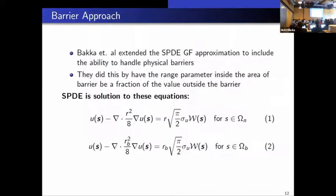So recently, Bakka and Rue, they extended the SPDE, the Gaussian field approximation to include the ability to handle physical barriers like coastlines, islands, or whatever. And so the way that they did this is that their SPDE is the solution to the two equations given. And they have a range parameter, which is the R, which is the correlation. It's the distance at which the correlation approaches is approximately 0.13. So they have one range parameter and then inside the barrier, the range is 0.1 of the range outside the barrier. So it's just a fraction of the correlation of the value outside the barrier.